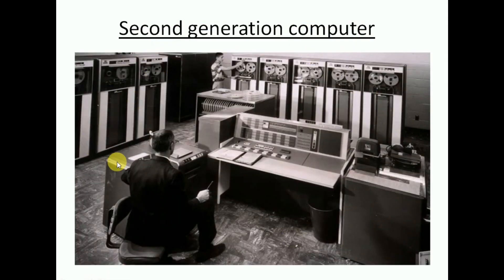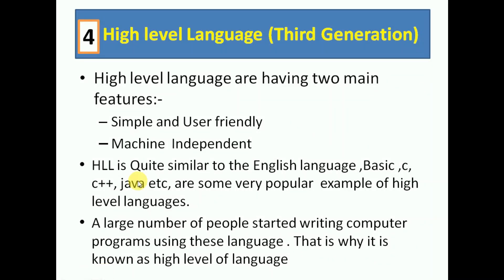Machines improved greatly compared to first generation computers. Moving on to high level language, used in the third generation. High level language has two main features: it is simple and user friendly, because if technology is easy for everyone to use, more people will use it.